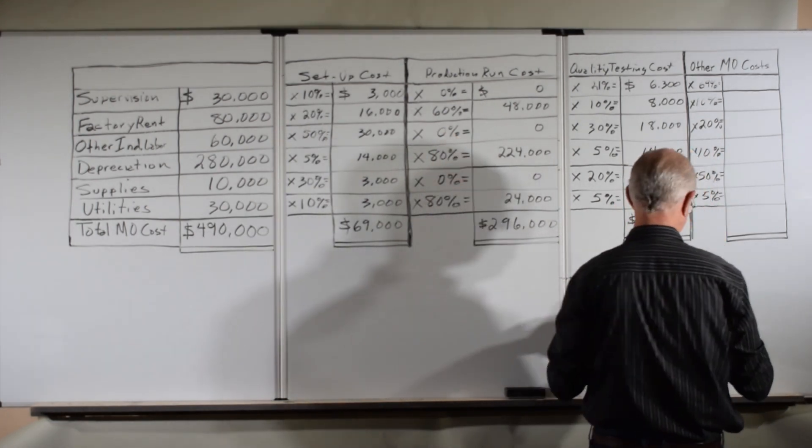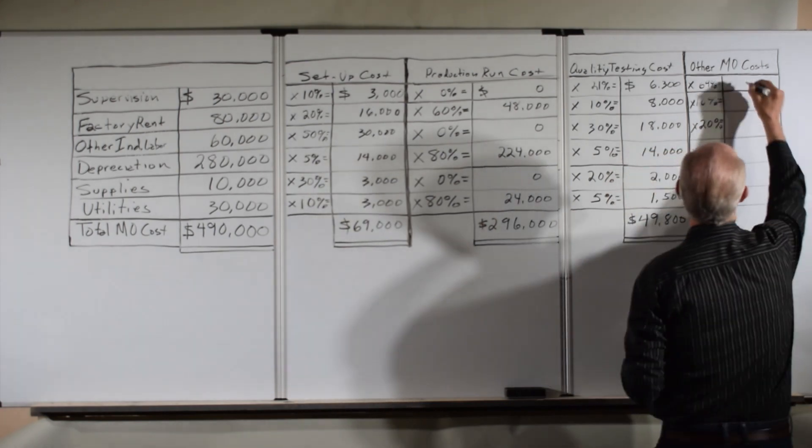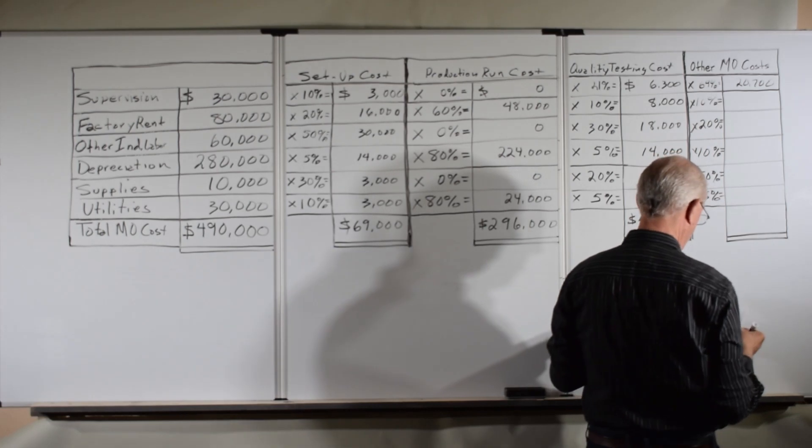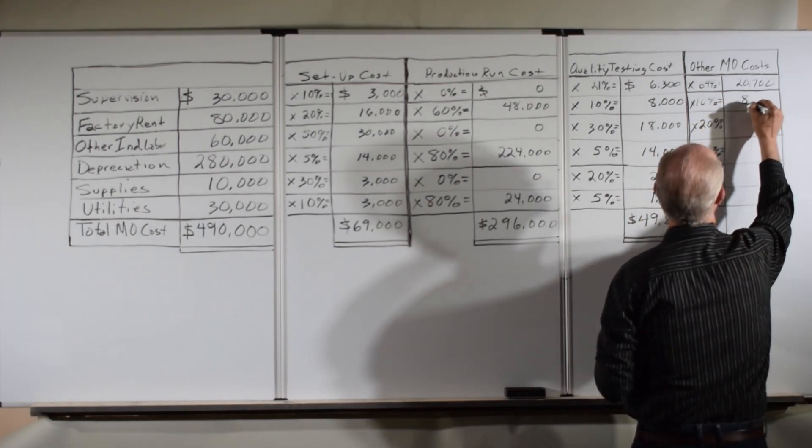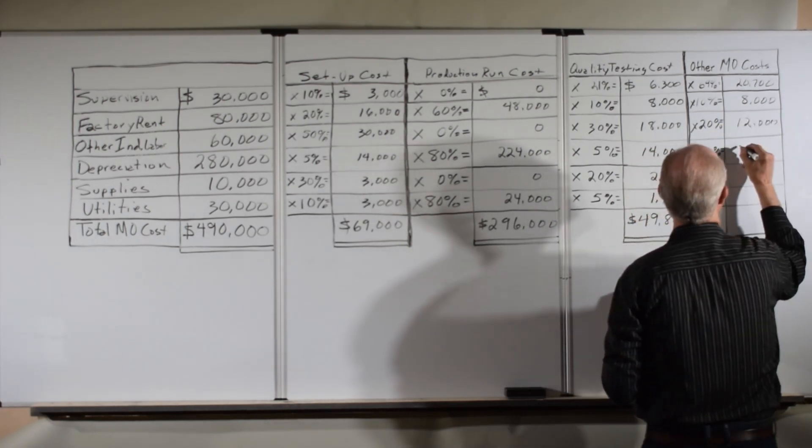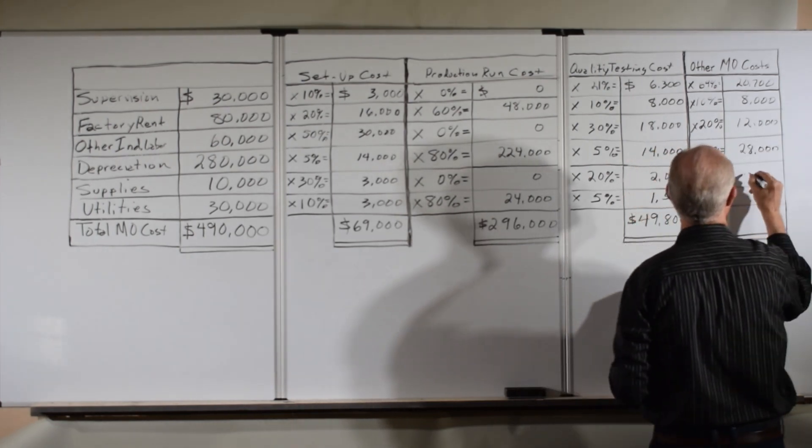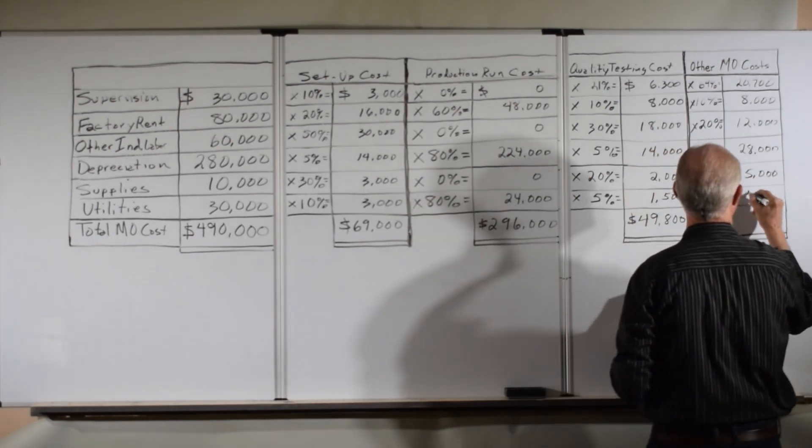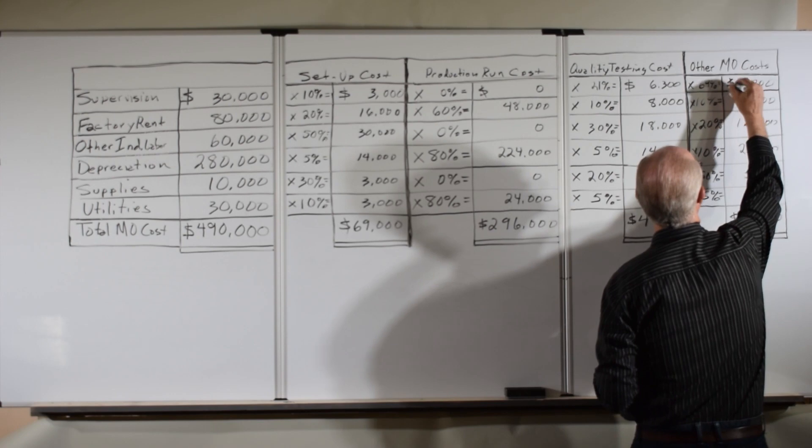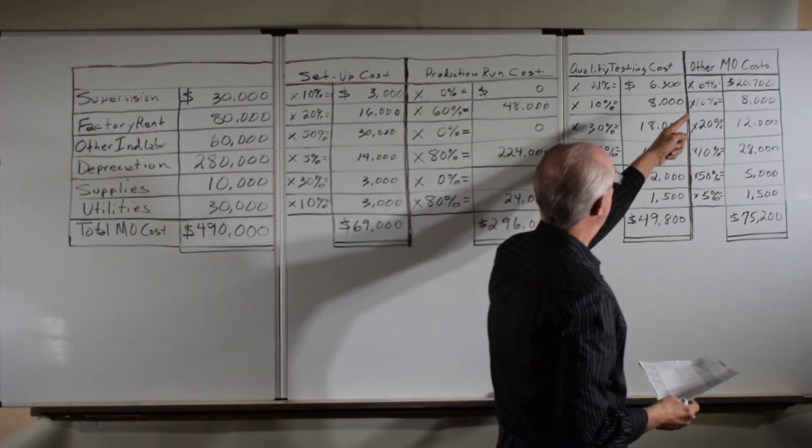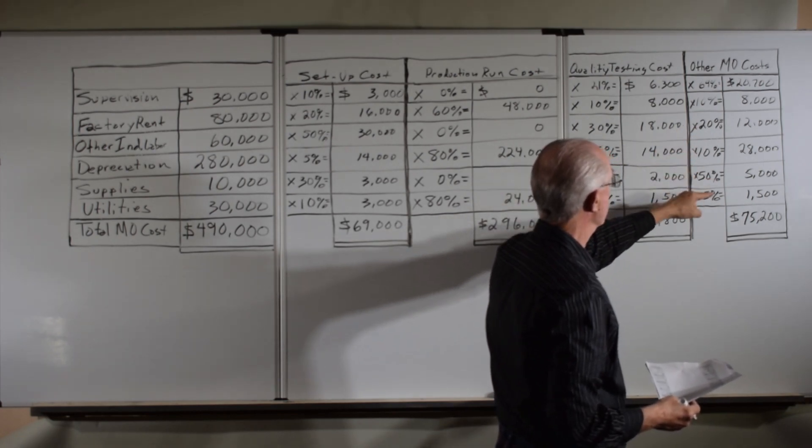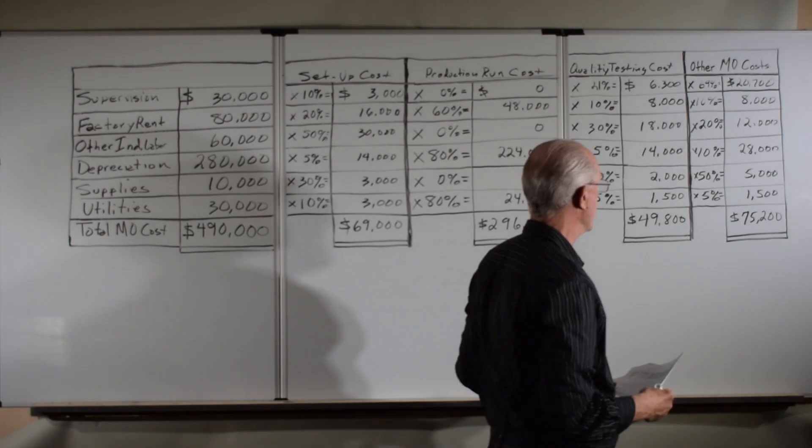Now let me go ahead and finish this up by doing the other manufacturing cost. 69% of the 30,000 is $20,700. Going right on down the line, same math, same technique. That ends up being 20,700, 8,000, 12,000, 28,000, 5,000, 1,500 respectively for a total of 75,200.